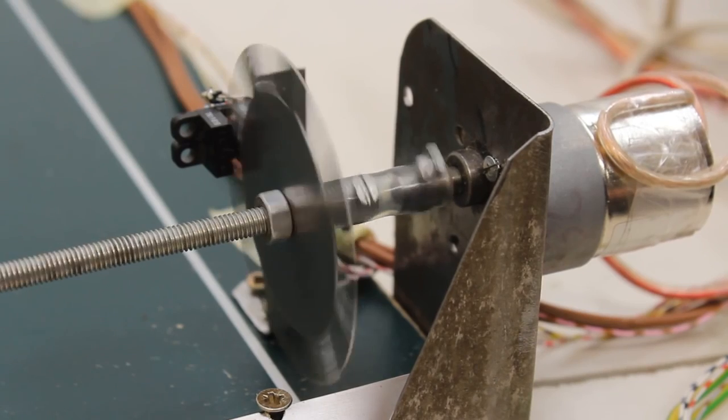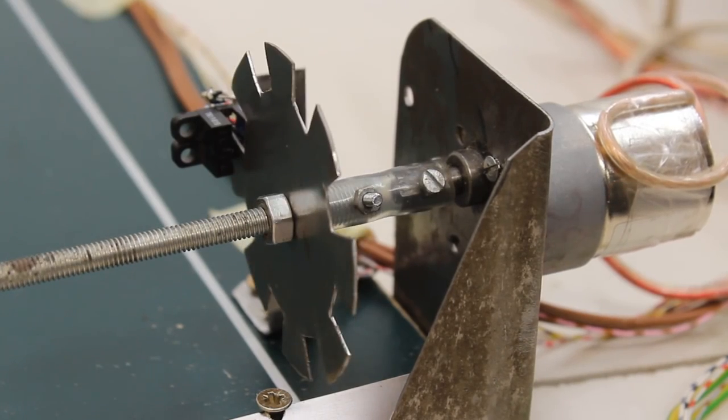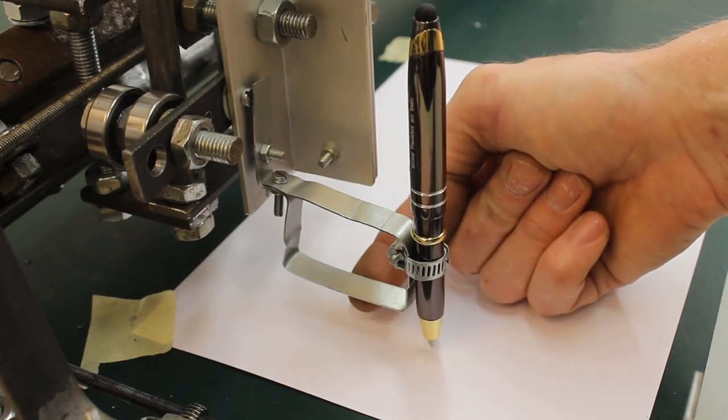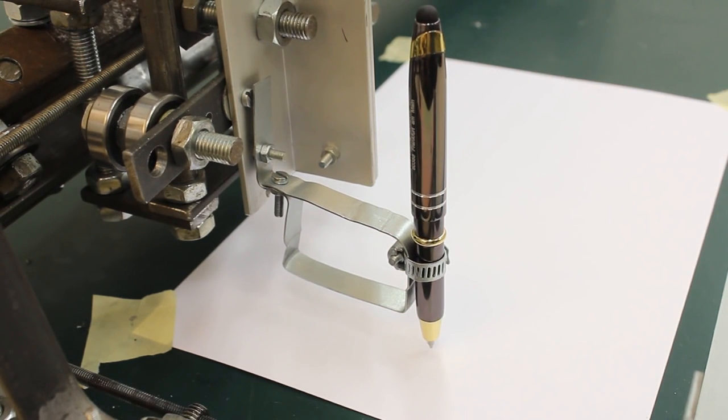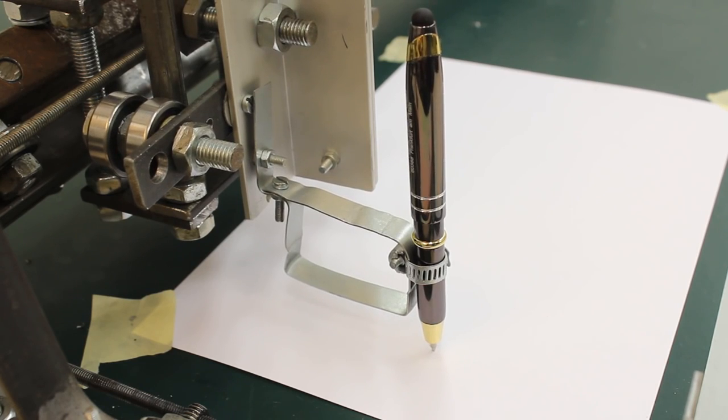Now, the machine is ready to run. First I would like to draw a test pattern on a piece of paper, thus I have attached a ball pen to the carriage of the Z axis.